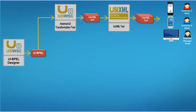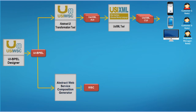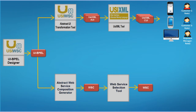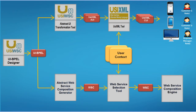The USIWSC framework also allows adapting the composition to user context. The definition of the web service composition is done in two steps: an abstract interactive composition is first defined, which is independent of any concrete web service; an executable web service composition is then generated by selecting the web services involved in the composition based on the user context. Finally, the composition is executed using a web service composition engine that orchestrates the control and data flows.